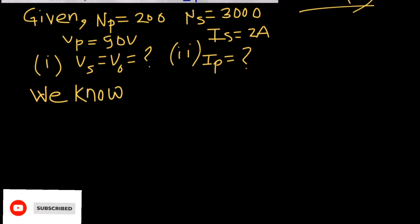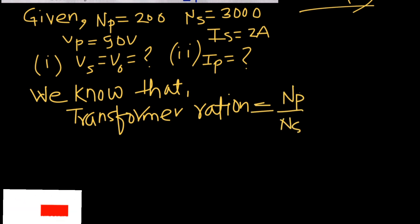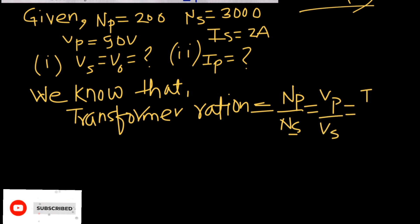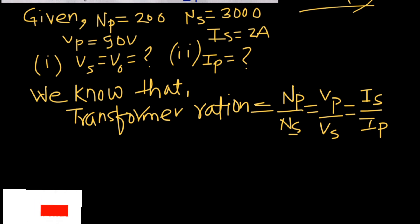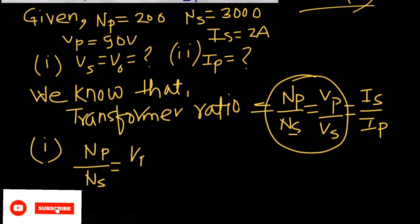We know the transformer ratio, also called the turn ratio or transformer formula. The relation is: NP/NS = VP/VS, and alternatively NP/NS = IS/IP. This is the transformer ratio for any type of transformer. We will now apply this relation and put in the values to find our answers. For calculating VS, I will use the relation NP/NS = VP/VS, since I know three of the four quantities in that relation.